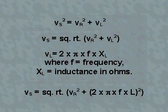Thus, V sub S squared equals V sub R squared plus V sub L squared. Or, V sub S is equal to the square root of V sub R squared plus V sub L squared.